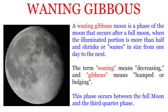A waning gibbous Moon is a phase of the Moon that occurs after a full Moon, when the illuminated portion is more than half and shrinks or wanes in size from one day to the next. The term waning means decreasing and gibbous means humped or bulging. This phase occurs between the full Moon and the third quarter phase.